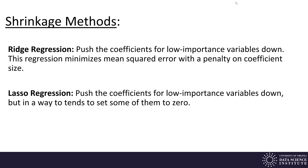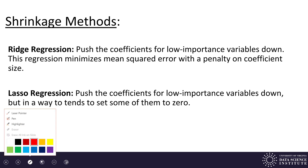The way both of these methods work is they're going to choose coefficients that minimize a mean squared error, but also minimize a penalty on the coefficient size. Here is the resulting difference between the two methods.